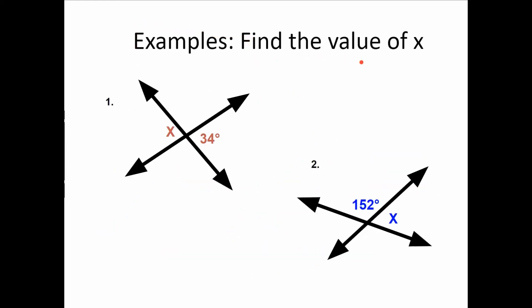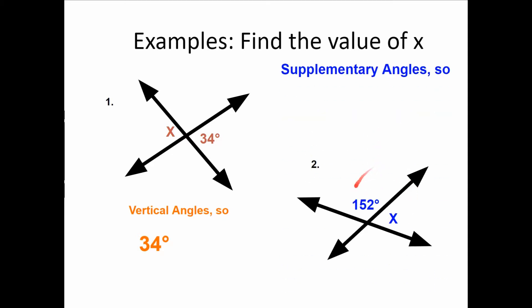Find the value of x. Notice x is across from 34 degrees — they share the same vertex with two lines intersecting and are right across from each other, making them vertical. Vertical angles are congruent, so x equals 34 degrees. For angle 152 and x on a straight line: since 152 is vertical to the angle across from it, and the straight line is 180 degrees supplementary, we get 180 minus 152 equals 28 degrees for the missing angle x.